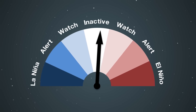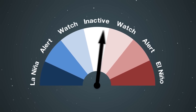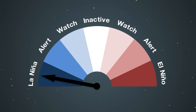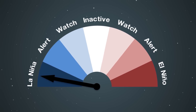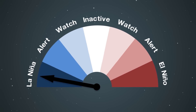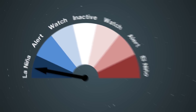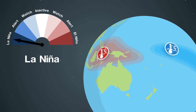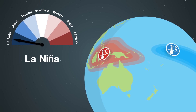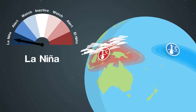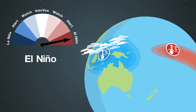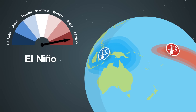Climate factors such as whether it is El Niño or La Niña can have a significant impact on monsoonal variability. La Niña typically means earlier than normal monsoon onset, while El Niño is often associated with rainfall during the monsoon season being less than average.